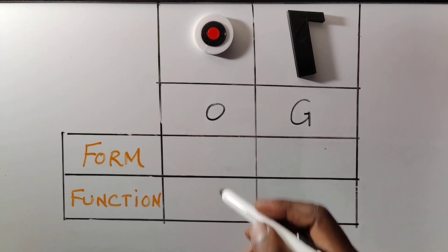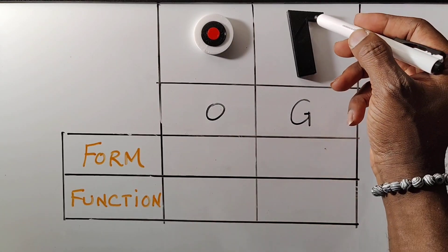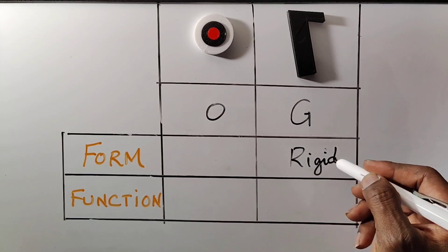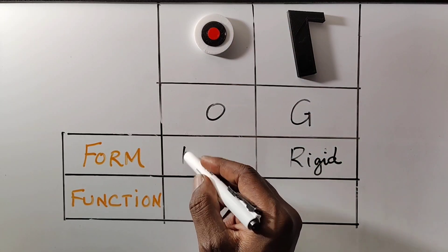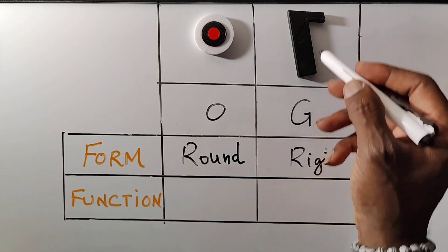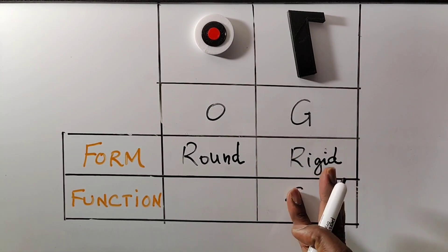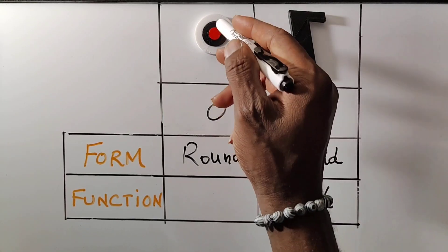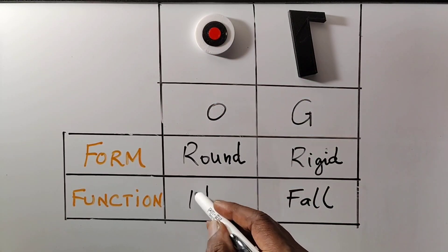In form, G means rigid and the O means round. In function, the G means fall and the O means no.